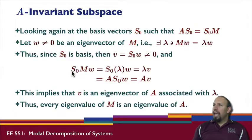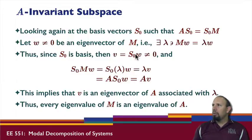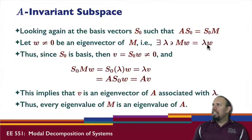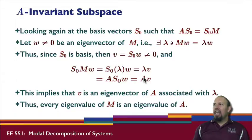Looking at S₀ M times W: since M times W is lambda times W, moving lambda over I have S₀ times W, which we call V. On the other side, A S₀ times W gives A times V. So we have AV equals lambda V. This says if lambda is an eigenvalue of M, then lambda is also an eigenvalue of A, and the eigenvectors are related.